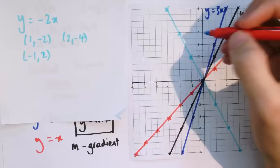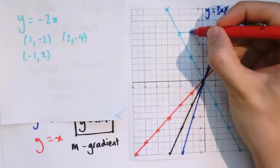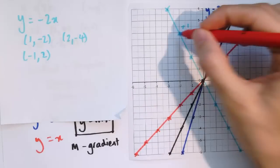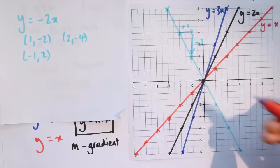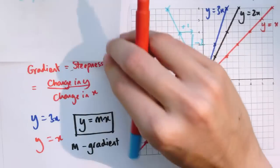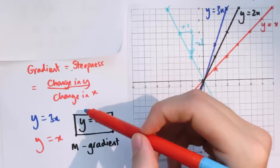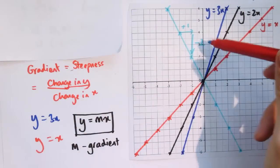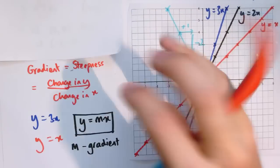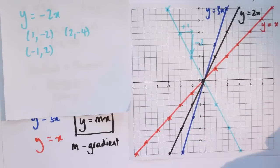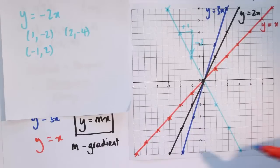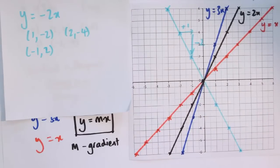So the gradient is negative — a change in x of plus 1 leads to a change in y of minus 2. The formula change in y divided by change in x still holds and gives us the gradient. The gradient doesn't have to be a whole number either — we could have y equals one-third x or five-thirds x, and it would go up one-third or five-thirds for each unit of x.